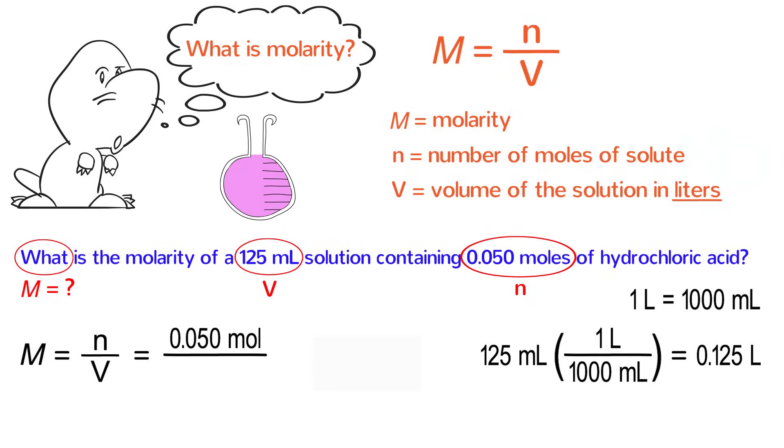Back to the original problem. V equals 0.125 liters, so put that in the denominator. Do the division, and the answer works out to be 0.40 moles per liter. In general, the units of molarity are moles per liter.